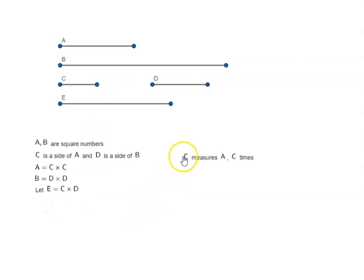Based on this, C measures A C times. D measures E C times. Since they measure the same number of times, we can say C is to D is equal to A is to E.